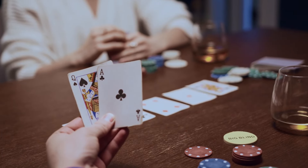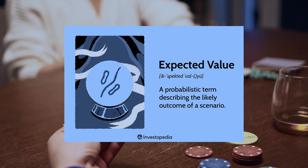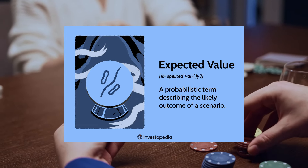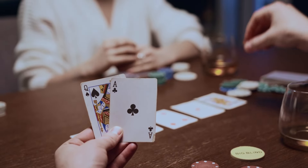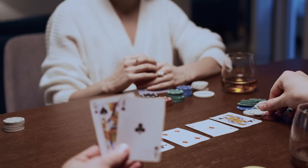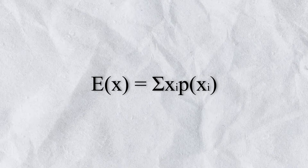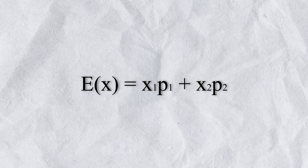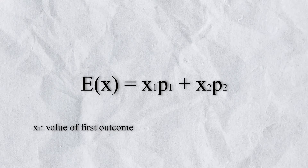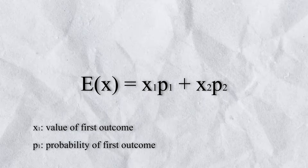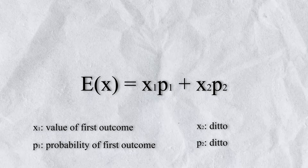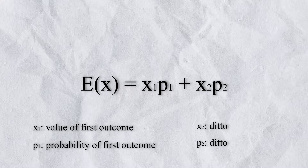Thankfully, there is. In probability theory, the concept of expected value helps us understand the mean or long-term average of random outcomes. We can express the expected value of a random variable x with this equation. But this equation is a little ugly to look at, so we're going to simplify it for our purposes. In this equation, there are only two possible outcomes. x1 represents the value of the first outcome, while p1 represents its probability of occurring. Likewise, x2 and p2 represent the value and probability of the second possible outcome.